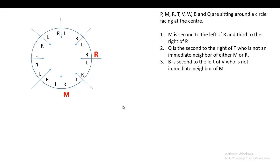The second condition is that M is third to the right of P. So P should be placed such that going three places to the right — in the anti-clockwise direction — lands on M. M is third to the right of P.